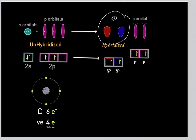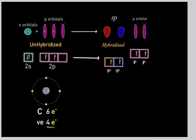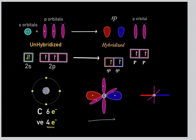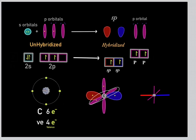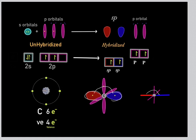The last way we can hybridize is sp hybridization. We take one s orbital and one p orbital, and these two orbitals fuse and hybridize to form two sp hybridized orbitals. So therefore, two of the p orbitals remain unchanged and are unhybridized. An sp hybridized carbon has two sp hybridized orbitals and two p orbitals. These two sp orbitals are 180 degrees from one another, forming a linear geometry. So this would be an sp hybridized carbon.